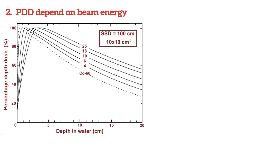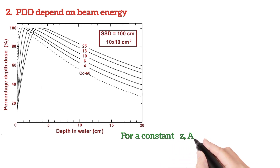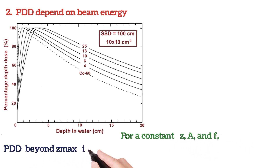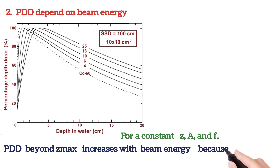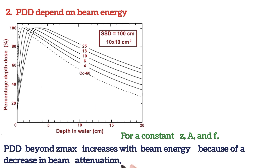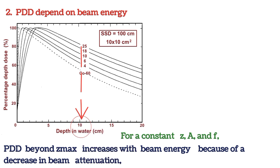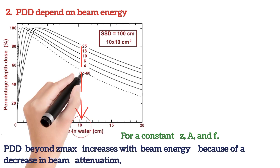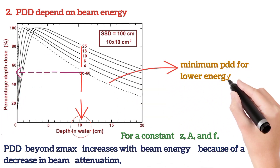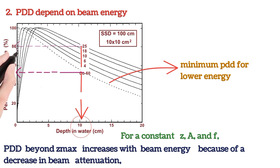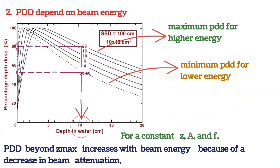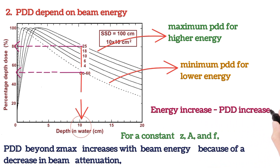We see how PDD depends on beam energy. For a constant field size, SSD, and fixed depth, PDD beyond Z max increases with beam energy because of a decrease in beam attenuation. At a fixed depth, SSD, and constant field size, lower energy has a minimum value of PDD, and for higher energy, PDD has a maximum value. Higher beam energy means higher deposition of dose, meaning higher PDD value.